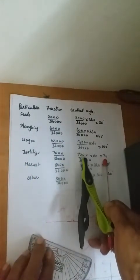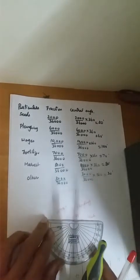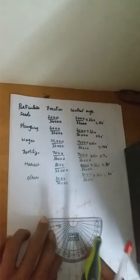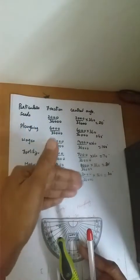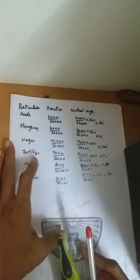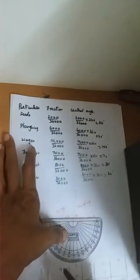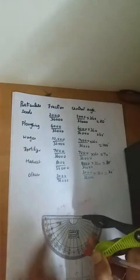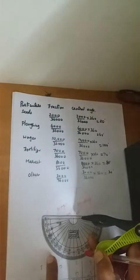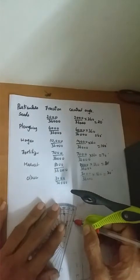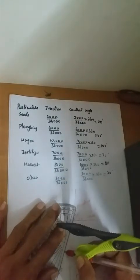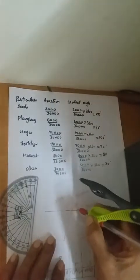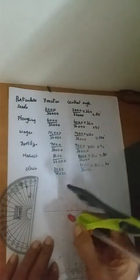The next category is 'Fertilizer' at 70 degrees. Again, keep the protractor so the base coincides with the last drawn line. 70 degrees is an acute angle. Count 0, 10, 20, 30, 40, 50, 60, 70 — join that point. This is your 70 degree sector for Fertilizer.